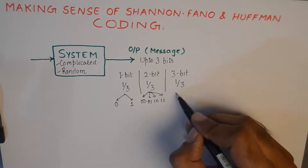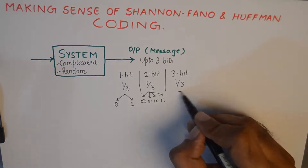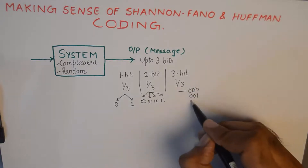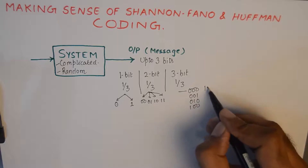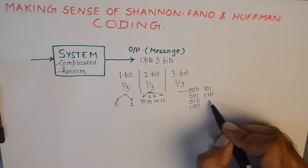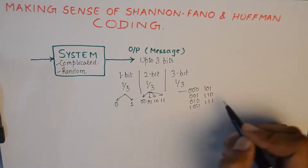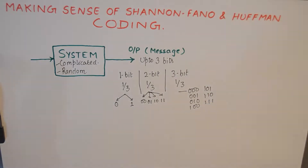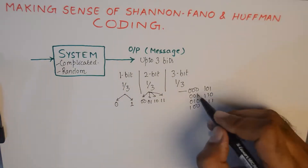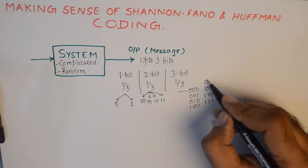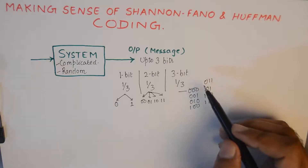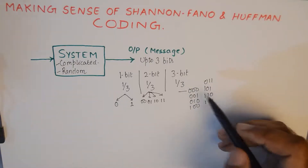In the case of three-bit messages, we could get 000, 001, 010, 100, 101, 110, 011, and 111 — so we'll get eight different three-bit messages in total.